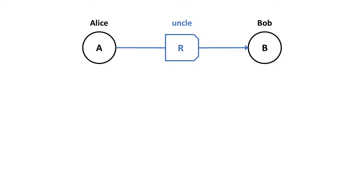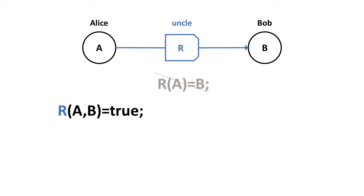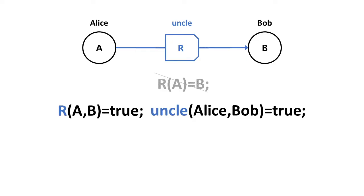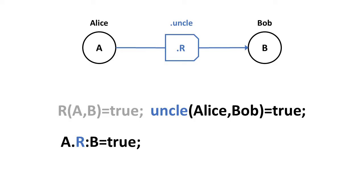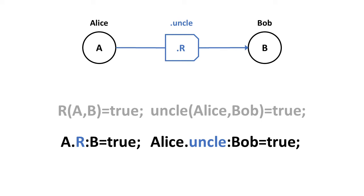Let's write this relation in a math-like notation. We might treat this as a function, where the relation R is a function that takes A as input and outputs B. In memetics, we use an R function that takes A and B as inputs while outputting true or false. For ease of typing, let's rewrite this statement as A.R:B = true, or in this example, Alice.Uncle:Bob = true.